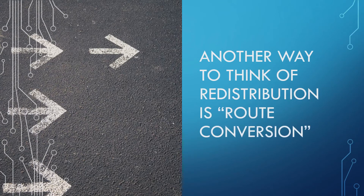Another way to think of redistribution is route conversion. If you're struggling with the concept, it's converting information or routes from one source into another. To use a metaphor — think of image formats. It'd be like converting a JPEG image into a PNG image. You're getting the same result, still getting an image at the end of the day, but making sure it's compatible. If something only reads PNGs but you've got JPEGs, you convert it. We're doing the same thing — converting OSPF routes into EIGRP routes, or whatever it may be.